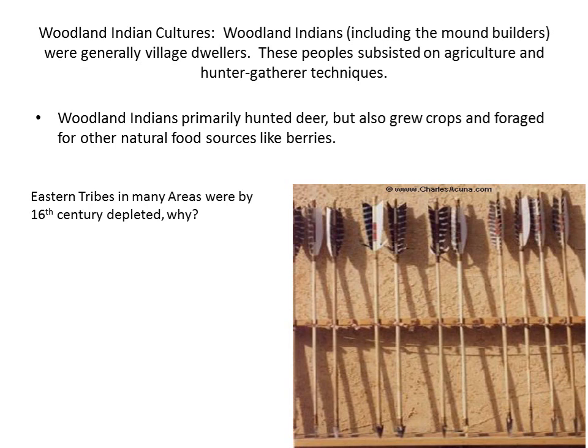Woodland Indian cultures, including the mound builders, were generally village dwellers who lived on hunter-gatherer techniques, basic subsistence agriculture, and hunting animals like deer. Many Eastern tribes during the 16th century, when you see the arrival of Spanish Americans, and then later at the end of the 16th and beginning of the 17th century the arrival of the English and French — many of these tribes were depleted, largely because of the movement of diseases like smallpox from areas of Spanish contact.